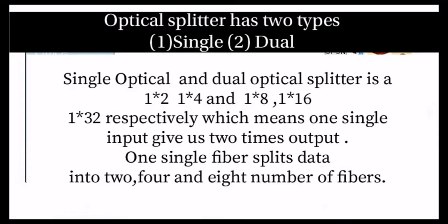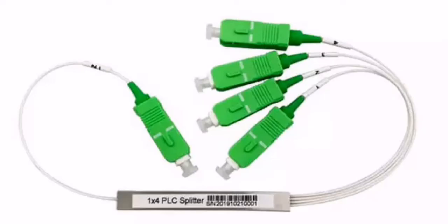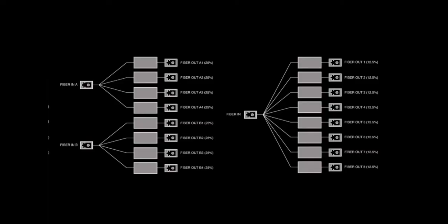Let me show you the splitter. This is a single fiber which is the input, and the four other fibers are the output. Data is transmitted through a single fiber and gives multiple outputs, as shown in the block diagram — the single fiber splits into four parts, and then further splits into eight parts.